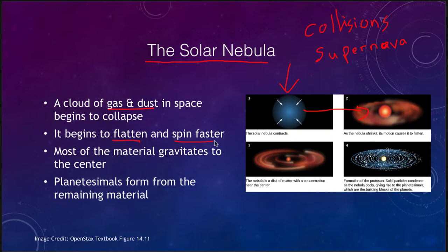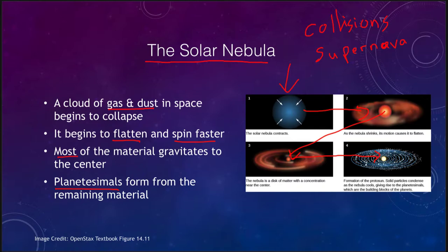The cloud begins to flatten and spin faster and faster, with material gravitating towards the center, forming a protostar at the center. We have a concentration of material, and then finally the star begins to form with planets and material around it. We don't form planets right away — we form planetesimals first. Planetesimals are just the building blocks of the planets that will eventually form. It's all due to this gas cloud that collapses with gravity pulling most of the material to the center, forming what will become the Sun. The rest of the material, the debris left behind, is what will form the planets.